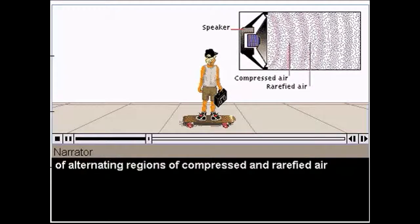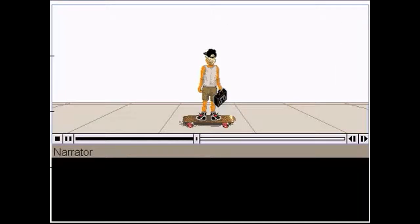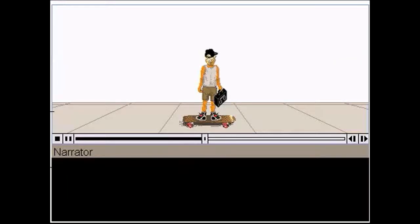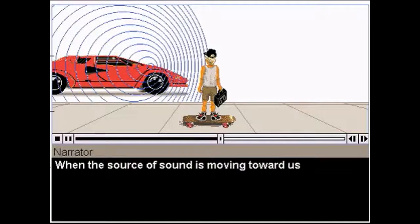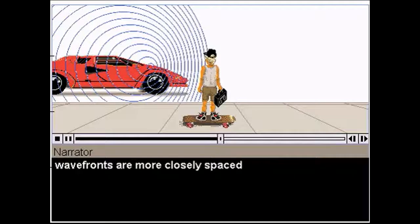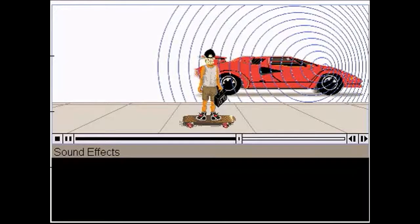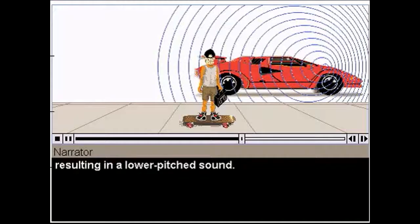Sound is made up of alternating regions of compressed and rarefied air that travel as a wave. The Doppler effect describes how the frequency or pitch of a sound changes when the source of sound moves toward or away from an observer. The pitch of a sound depends on how frequently wavefronts reach our ears. When the source of sound is moving toward us, wavefronts are more closely spaced and reach our ears more rapidly. We hear a higher pitch sound. When the source is moving away, fewer wavefronts reach our ears each second, resulting in a lower pitch sound.